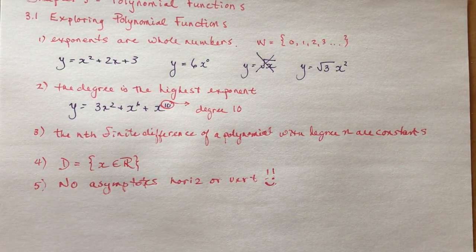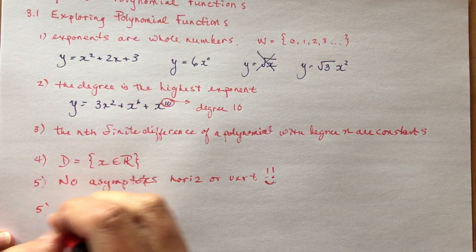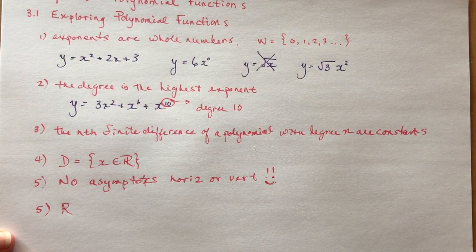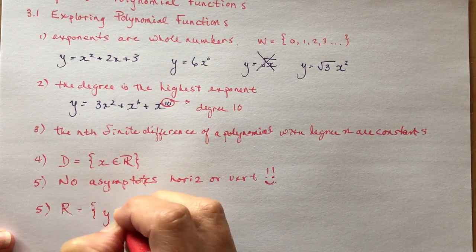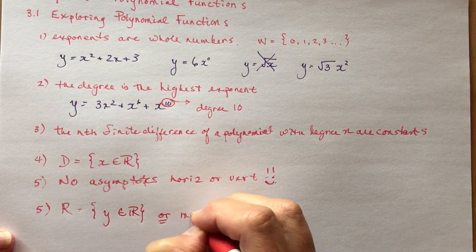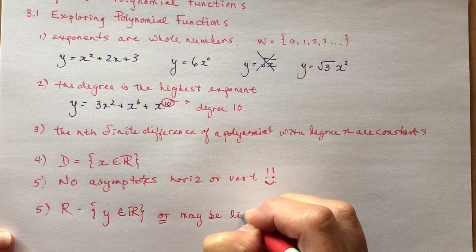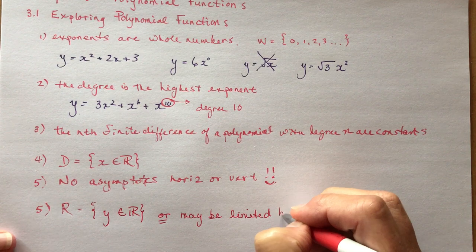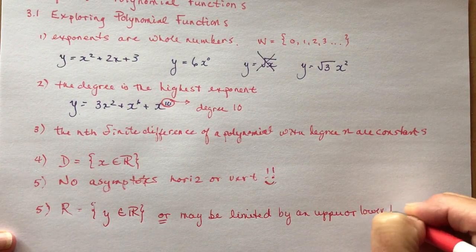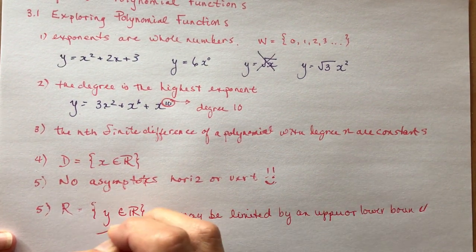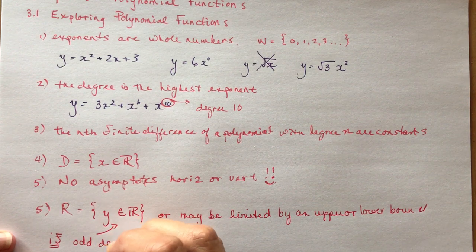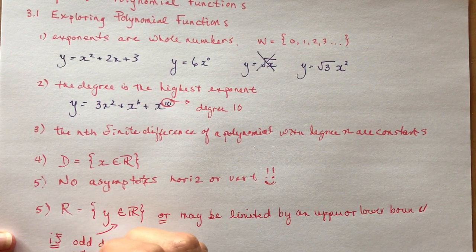Now, what about the range? The range is going to be y is an element of real numbers for some of them, or may be limited. You're going to be thinking about this while I write it. Limited by an upper or lower bound. What does that all mean? It's going to be real numbers if it's an odd degree polynomial.